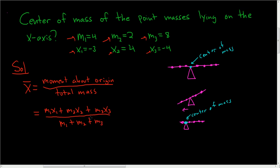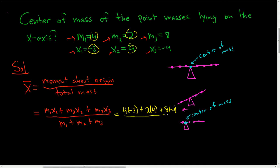And so this is equal to: m1 is 4, so we get 4 times negative 3, which is negative 12. And then plus m2 is 2, so it's 2 times 4. And then m3 is 8, so it's 8 times negative 4. And it's all being divided by the sum of the little m's, so 4 plus 2 plus 8.